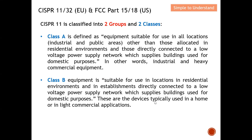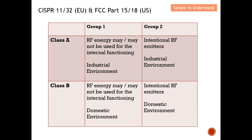Class B is the reverse of Class A — it is mainly for domestic use. Class B equipment is suitable for use in residential environments and in establishments directly connected to a low-voltage power supply network for domestic purposes. These are devices typically used at home or in light commercial applications. So when you make your product, you decide where to sell it: if it's for industry, test against Class A; if strictly for home use, you can use Class B. If it's for both, use Class A, since Class A is more stringent.